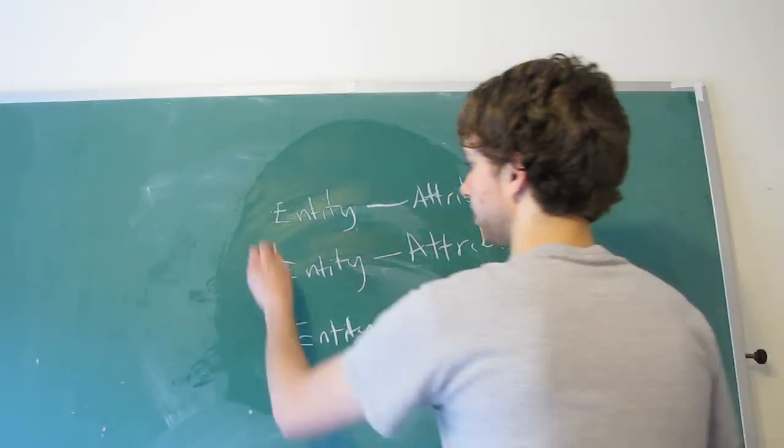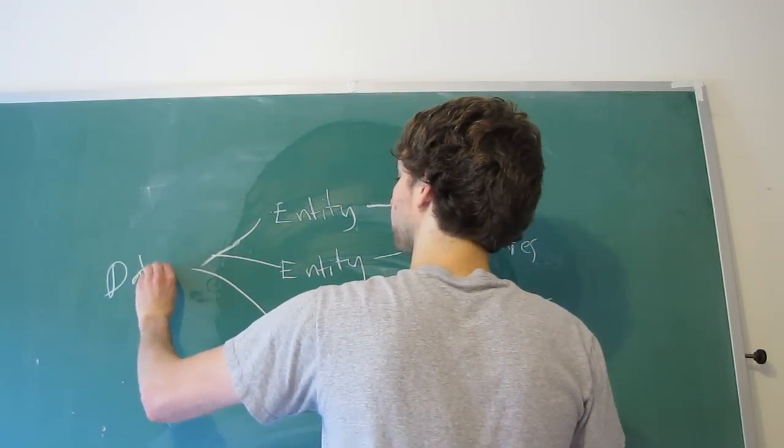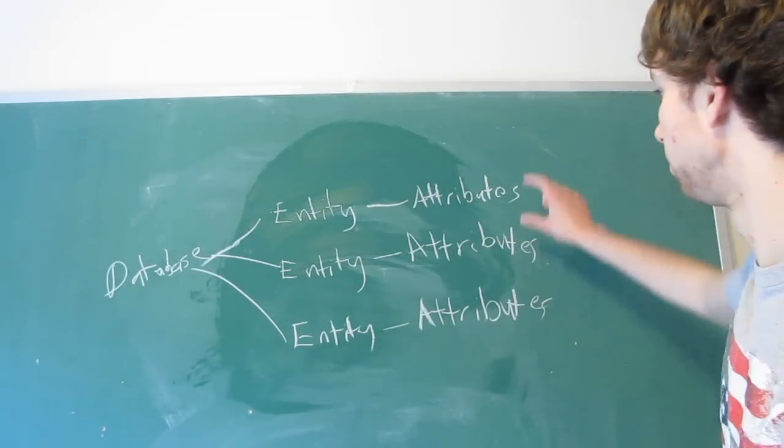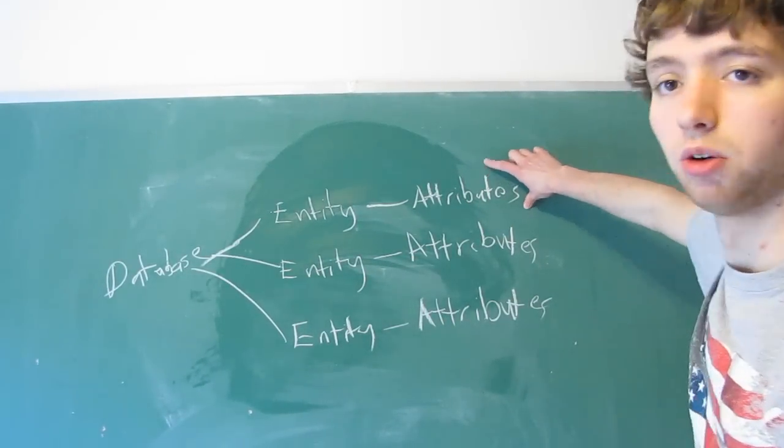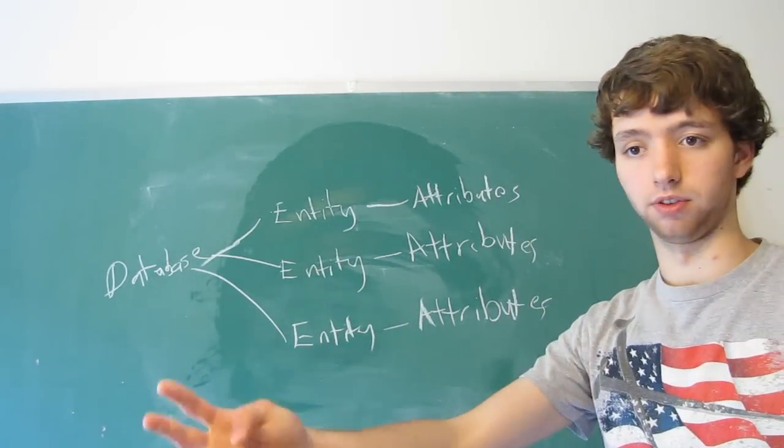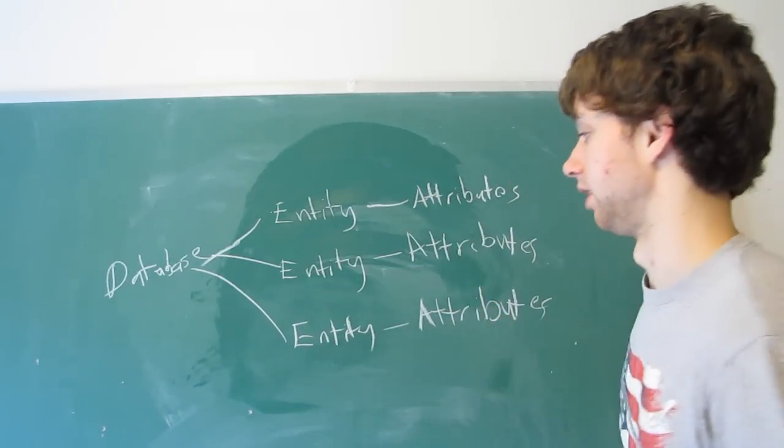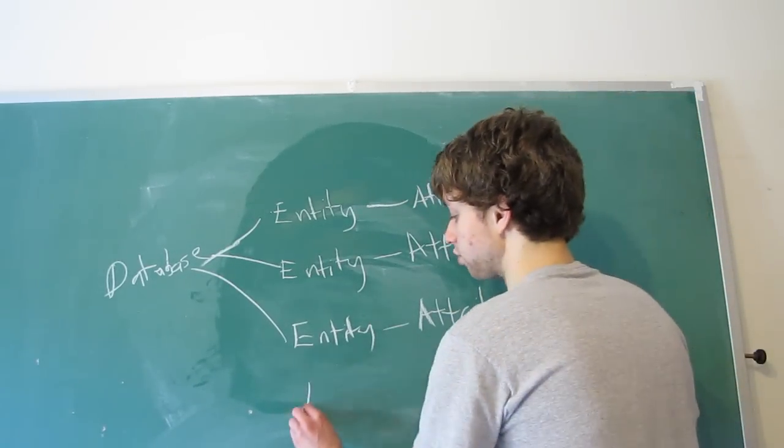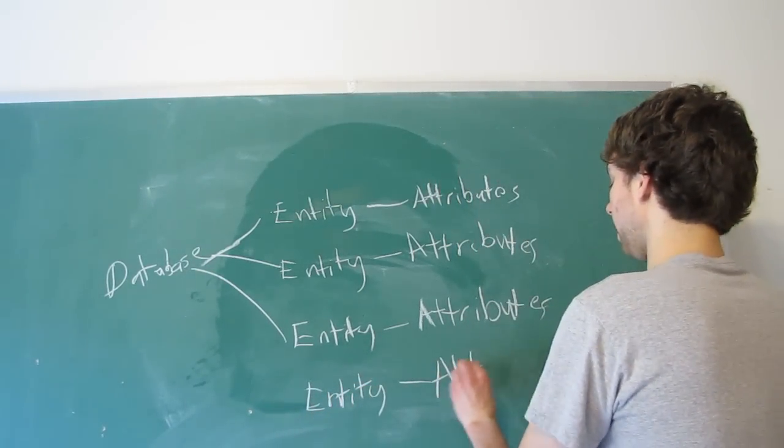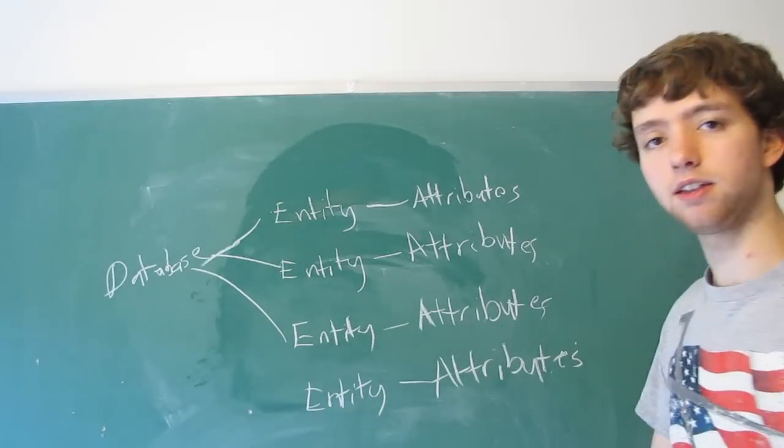And then multiple attributes about that entity. And then we can have a third entity. So just think student, professor, class. This is all part of our database. So our database structure consists of three entities and attributes about each one of those entities.